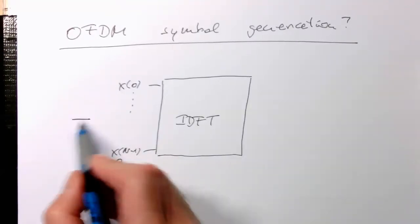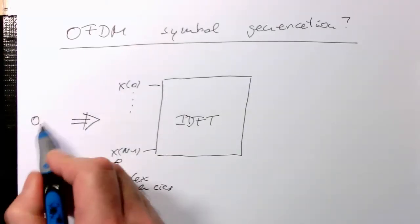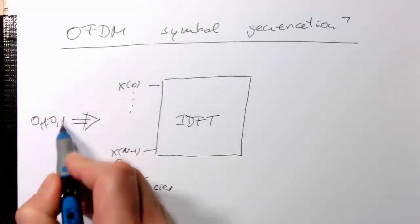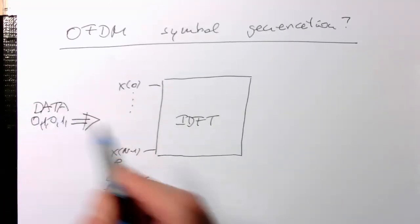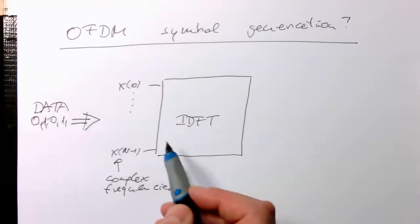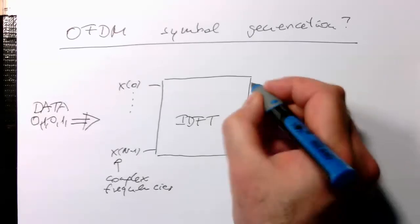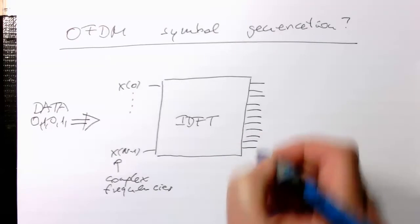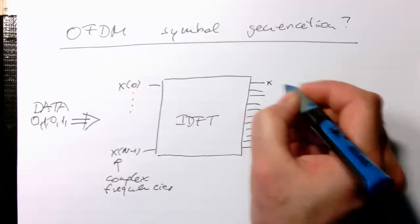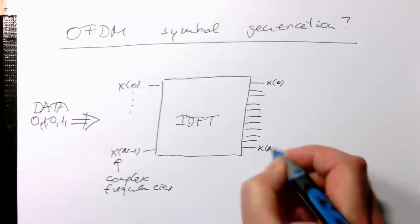So we need to turn our data into these complex frequencies here. And then obviously the output is also running from small x(0) to small x(n-1).